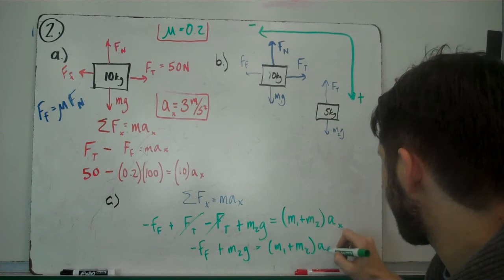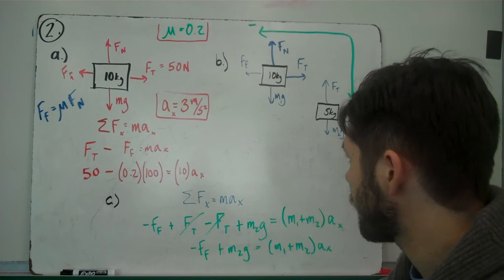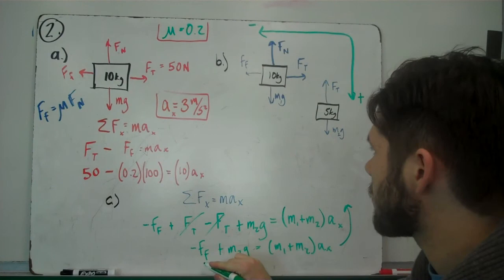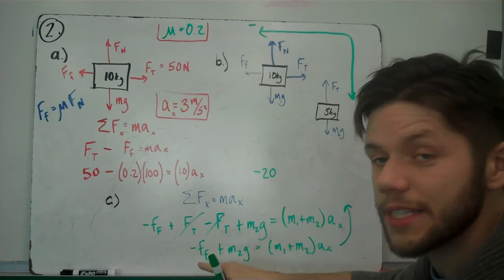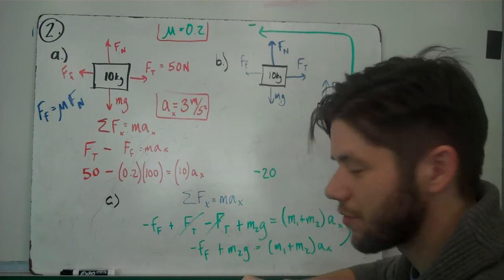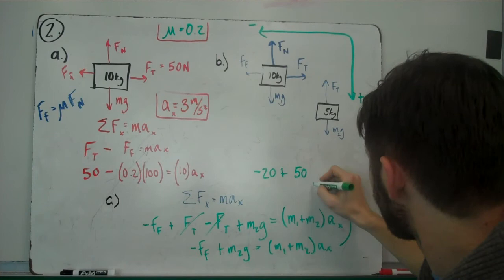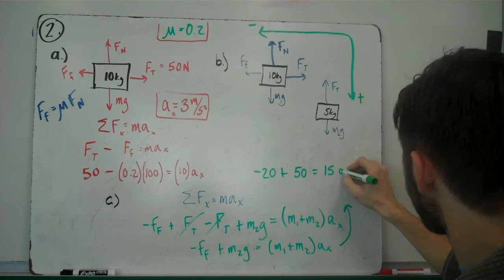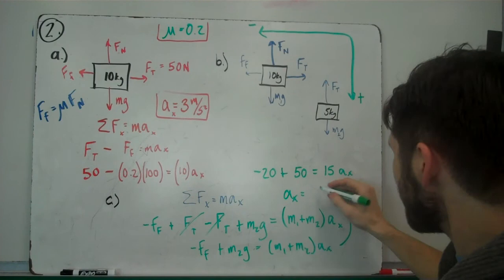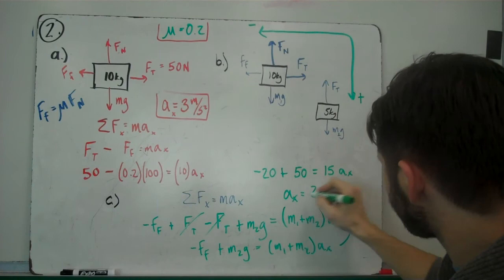And then, now we can plug in the numbers here. F sub F might be hard for you to see down here. So, I'm going to start to work up here a little bit. F sub F is the same as it was before. So, I'm just going to go ahead and substitute. That's negative 20. Reason it's the same before, just to be clear, is the normal force is the same on the 10kg object. And that's the object experiencing the friction. Plus, M2g. Well, M2g is 5 times 10, which would be 50. Equals, I add the masses together. 15, A sub X. And if you do the math, A sub X, this will come out to be 30. Divided by 15, you get 2 meters per second squared.